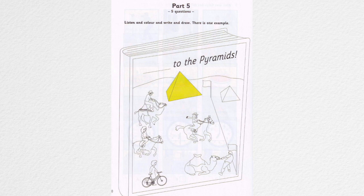2. Would you like to write something? Excellent. Can you see the name of the book? There's a word missing. The book is called Race to the Pyramids. Write the missing word, please.